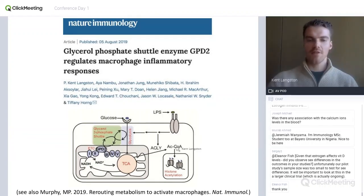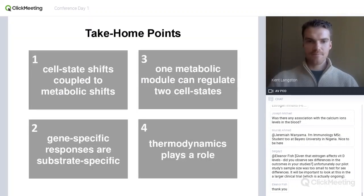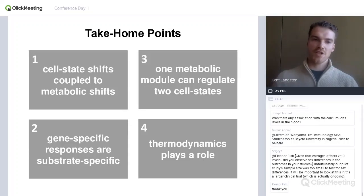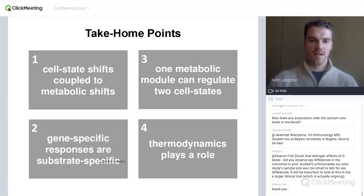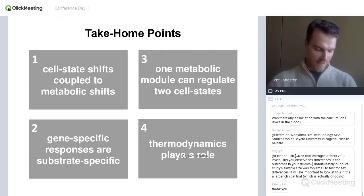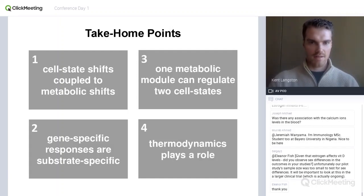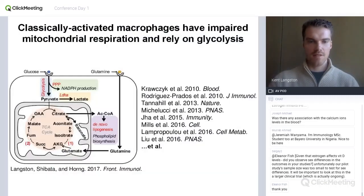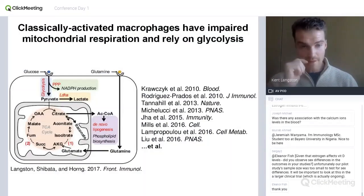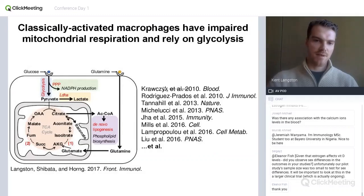I'm alluding to the acetyl-CoA acetylation axis that Luke mentioned earlier. The take-home points I want to mention are that there are metabolic shifts that are coupled to cell state shifts, that these shifts in metabolism are gene-specific so that certain gene sets respond to different substrate-dependent pathways, and that one metabolic module can actually regulate multiple cell states. I also have some material about thermodynamics, which people don't really think about in a biological context too often, but is important in macrophage immunometabolism.